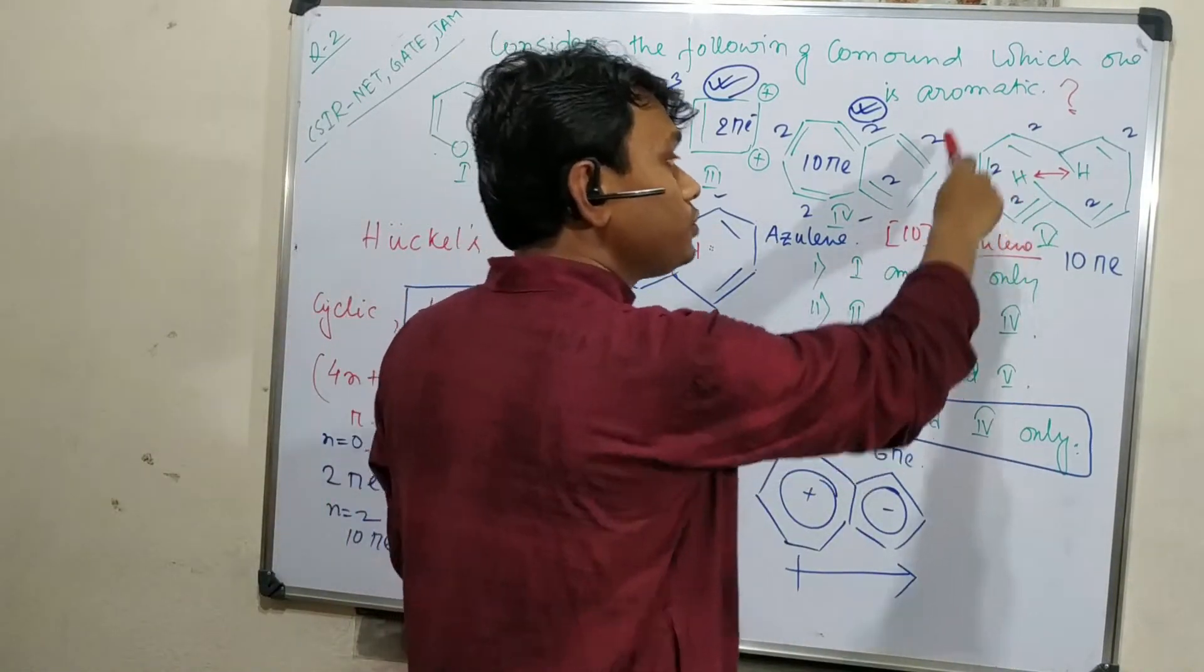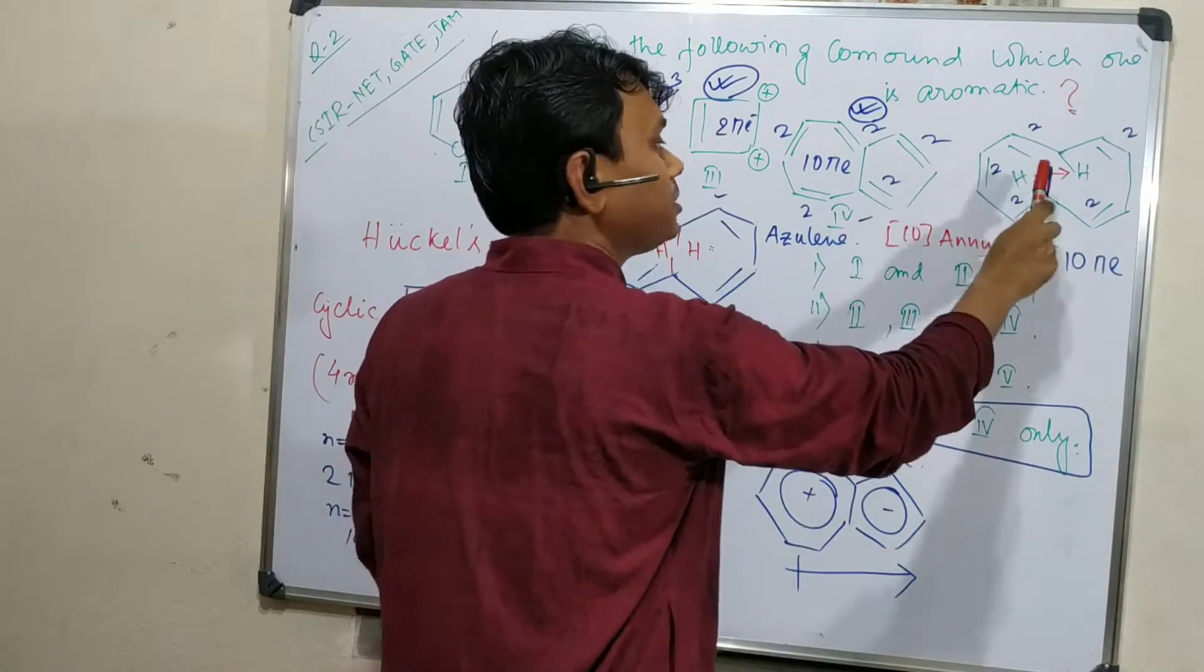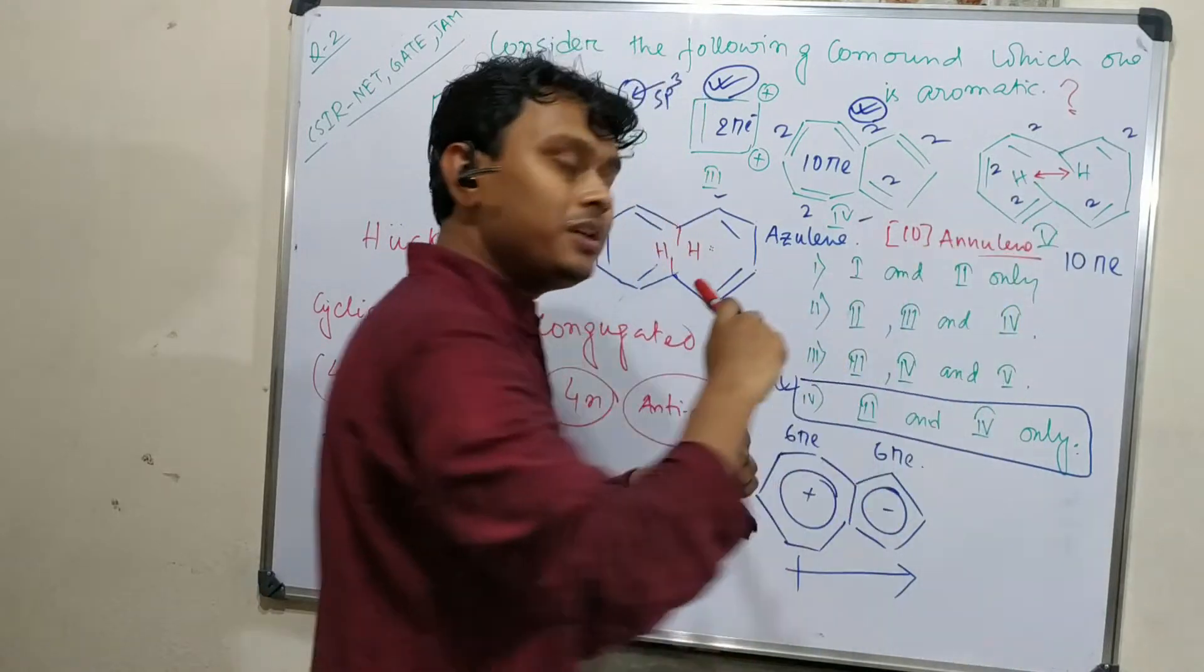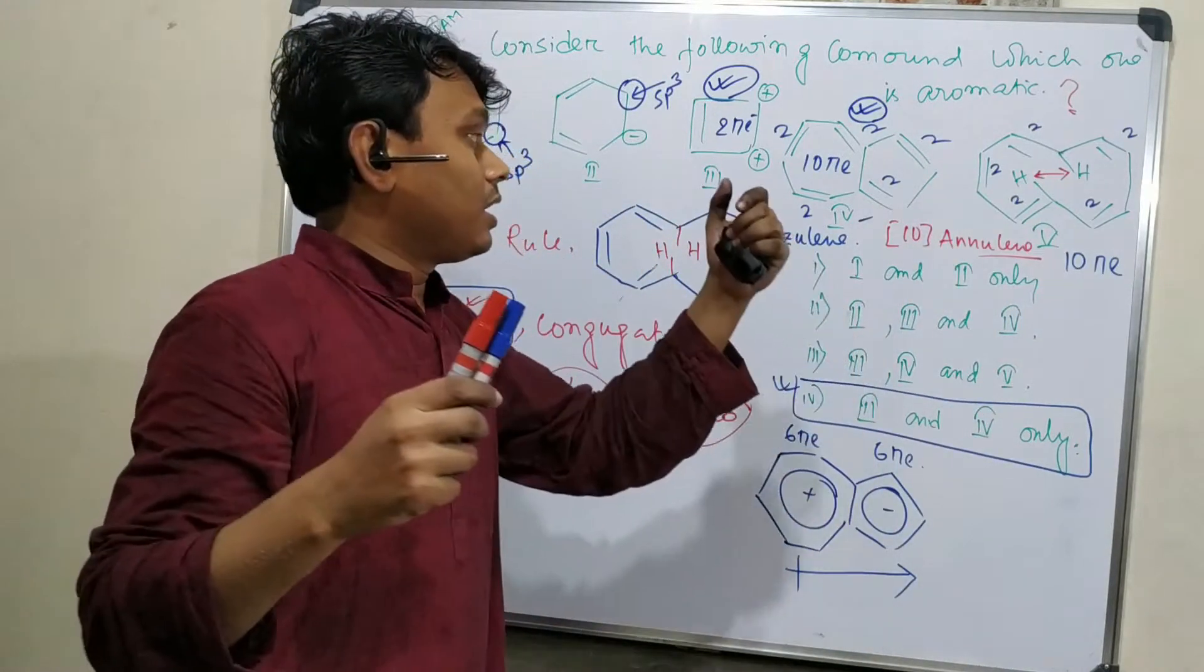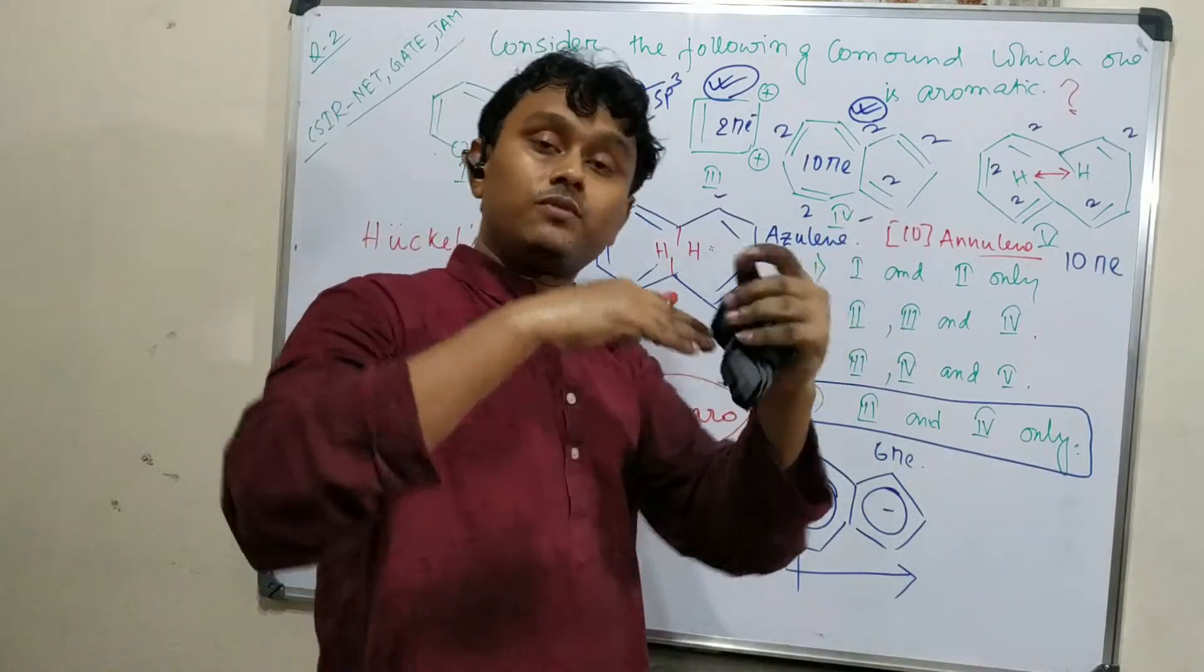Here, this is, of course, confusion will come here. But you have to keep it in mind: due to these 2 hydrogens, tremendous repulsion produces. That's why this molecule deviates from planarity.